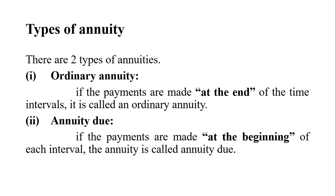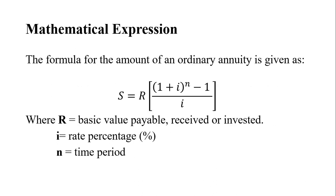The mathematical formulation of annuity is: S = R × [(1+i)^n - 1] / i, where R is the basic value payable, received, or invested; i is the given rate percentage; and n equals the time period for which we use that value in terms of paid, received, or invested.